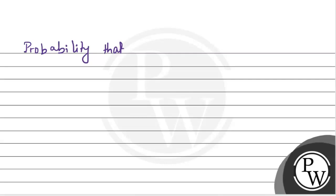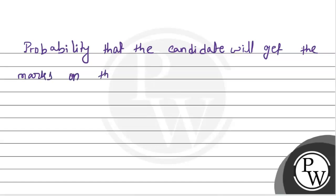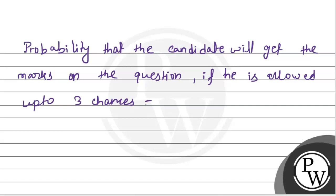The probability that the candidate will get marks on the question if he is allowed up to 3 chances will be 1/15 + 1/15 + 1/15, which is equal to 3/15. And this is equal to 1/5. Hence the final answer is that the probability that the candidate will get marks on the question if he is allowed up to 3 chances is 1/5. Hope you understood it well, best of luck.